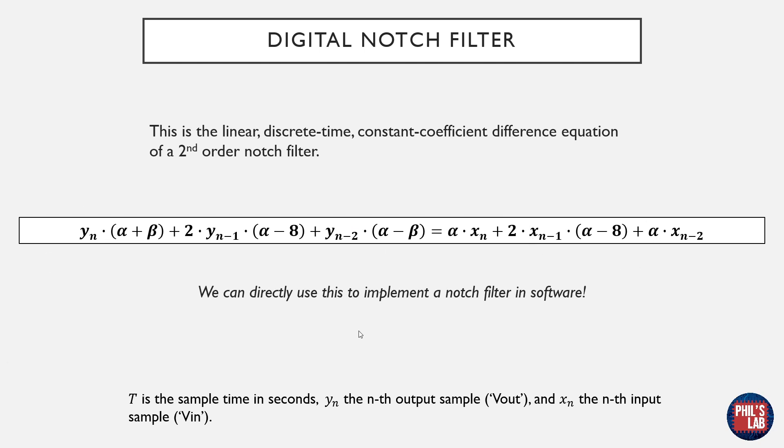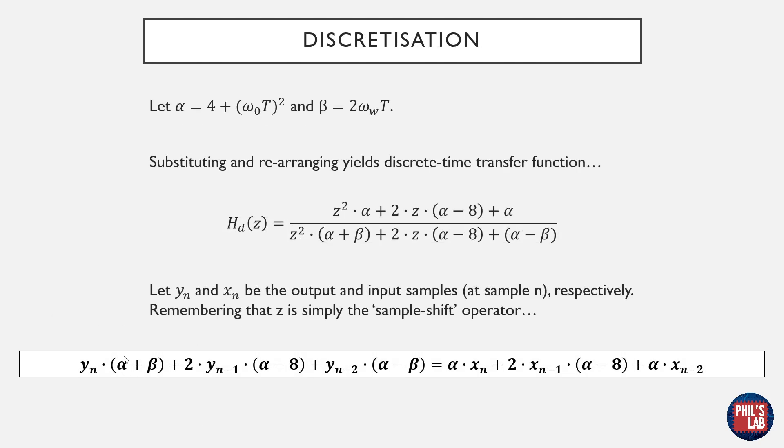So this digital notch filter turns out to be a second order filter which makes sense since we have one inductor and one capacitor. The coefficients alpha and beta I've simplified by substituting with these terms up here and again please see my notch filter video for further description.